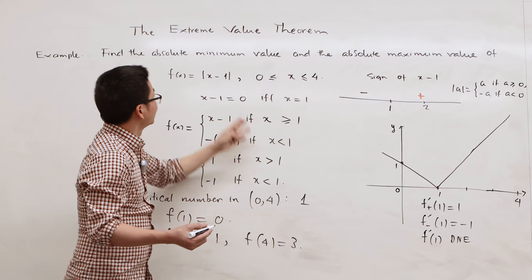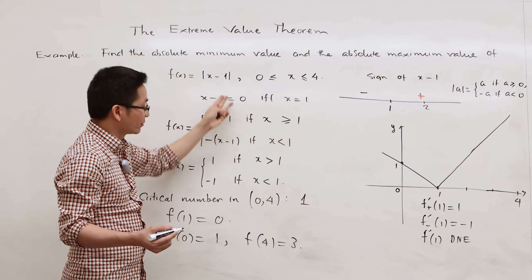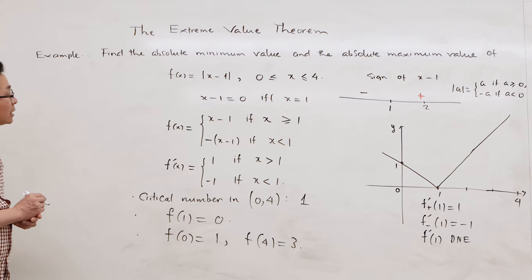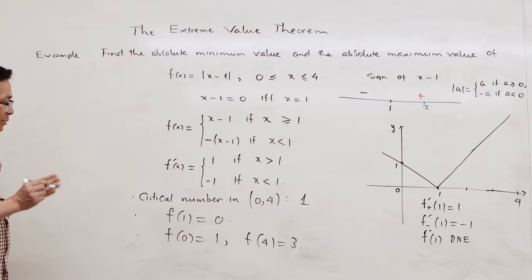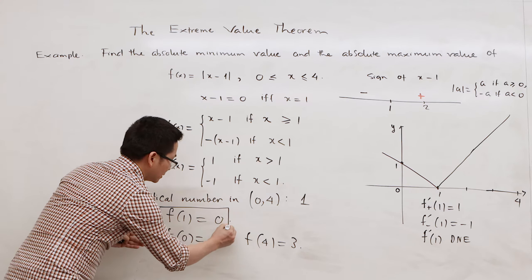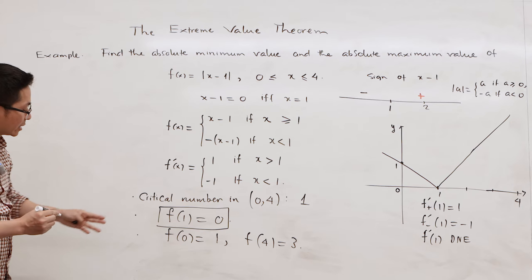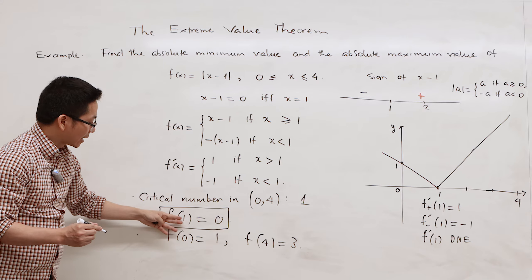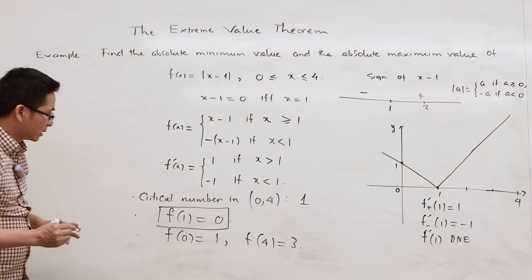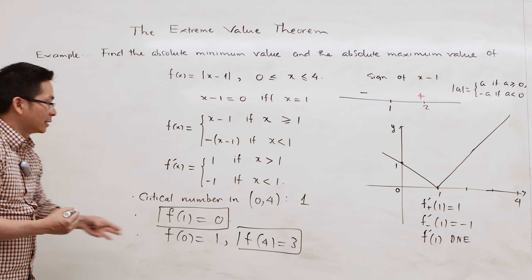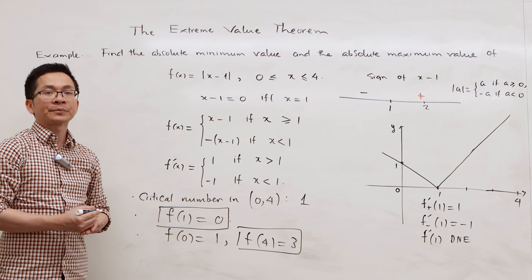Next, f(4): we replace x by 4. We get 4 minus 1 equals 3, and the absolute value is 3. Now we are ready to determine the absolute minimum and maximum values. We conclude that the absolute minimum value is 0, attained at x = 1, and the absolute maximum value is 3, attained at x = 4.